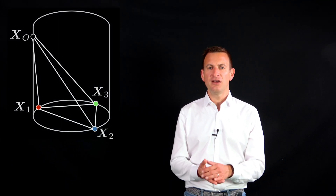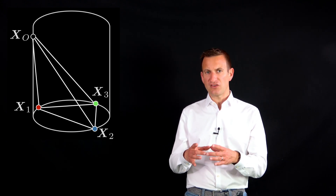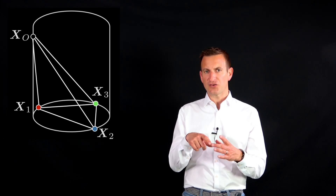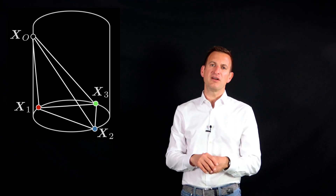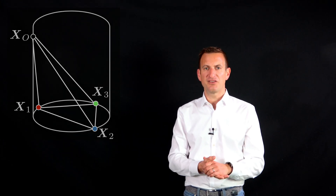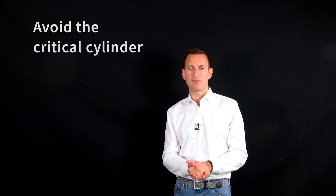There is also a critical configuration called the critical cylinder, for which the solution becomes unstable. Envision a cylinder sitting on top of the points, where x1, x2, x3 sit on a circle forming a cylinder, and the projection center x0 is located on the surface of that cylinder. This is an unstable situation where you cannot compute your solution. You need more points to achieve a better geometric configuration and resolve that problem.